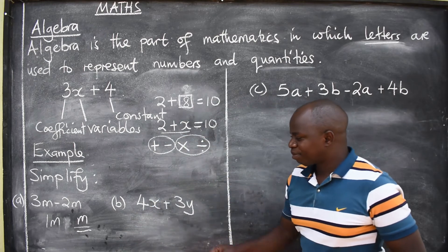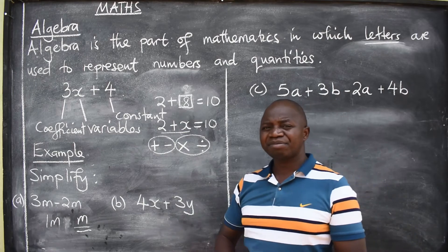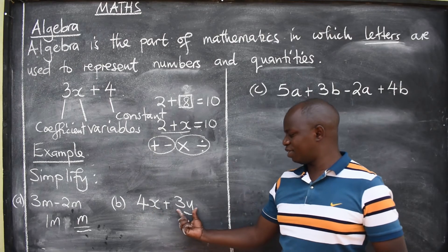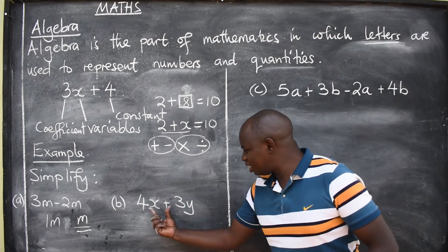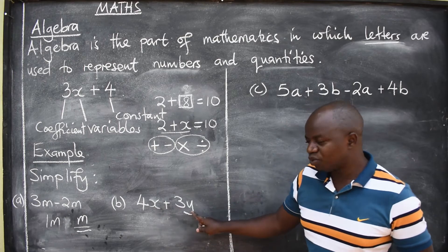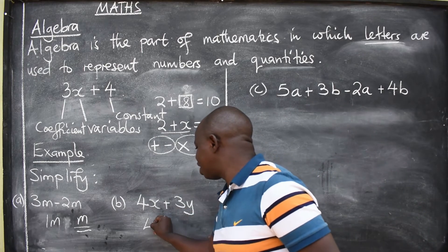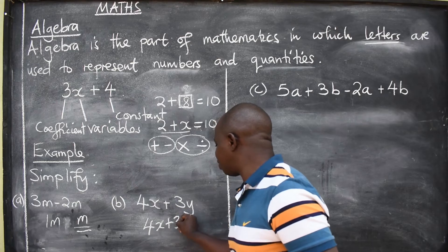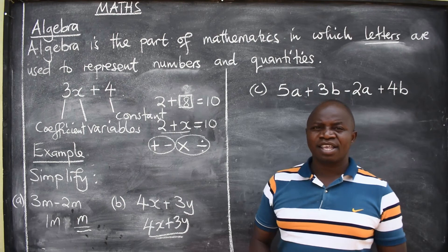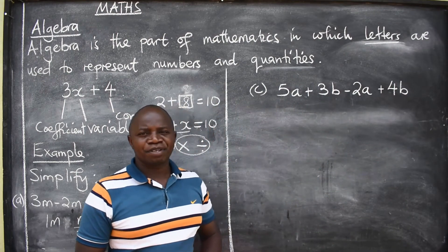We look at B. 4X plus 3Y. What is the correct answer here? Well, you look at the terms. I've got two terms: 4X this side, 3Y this side. Can these two be added? No. There's X here, there's Y here. So I can't add them. The answer to this will remain the way it is, 4X plus 3Y. You can't add things that are not like terms.